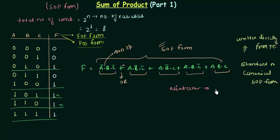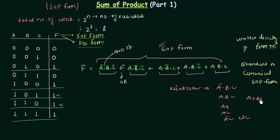The min term usually looks like A complement, B, and C. I am calling it min term because if I write A or B or C, that is the max term. And if I write A and B and C, that is the min term. We are calling it max term and min term because of their look. So all these terms in our SOP expression are our min terms.